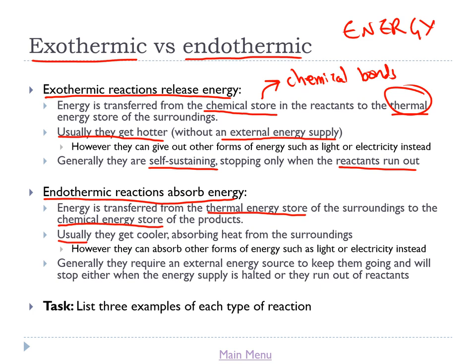This has the effect of cooling the surroundings down, so usually these reactions get cooler — the temperature goes down as they absorb heat from the surroundings. However, it's not always heat that they absorb to drive the reaction; sometimes it might be light. Photosynthesis is a good example — plants photosynthesize and that process is driven by light, so it's an endothermic reaction. Electrolysis, where we break compounds down using direct electric current, is also an endothermic process driven by electrical energy. These reactions typically require an external energy source to keep going and will stop when the energy supply is halted or they run out of reactants.